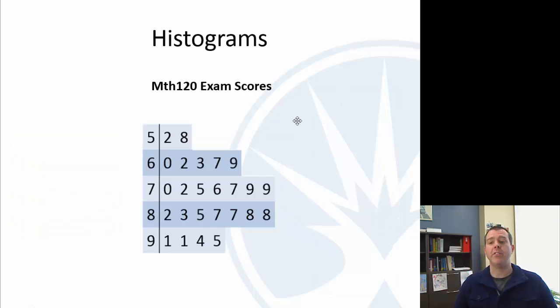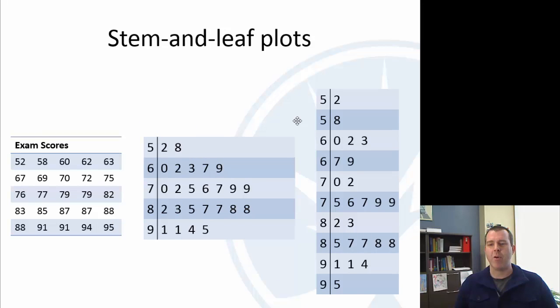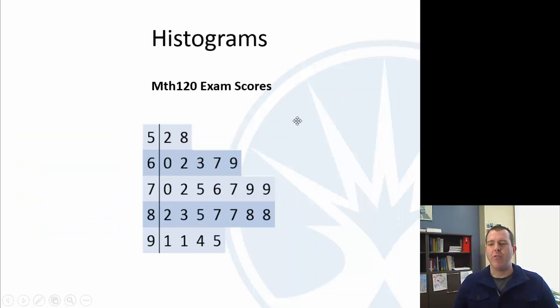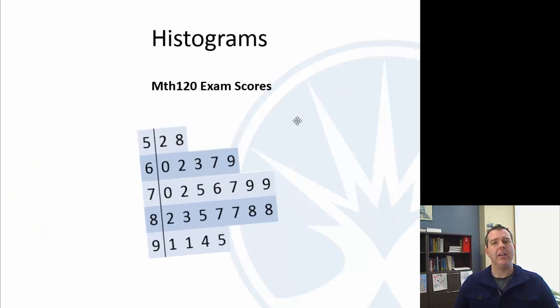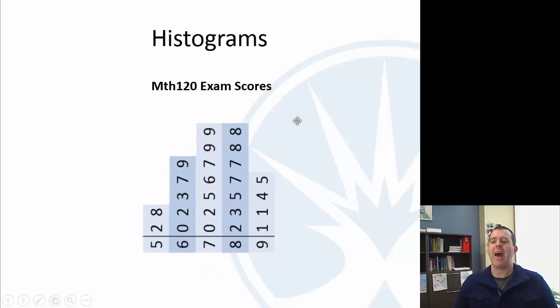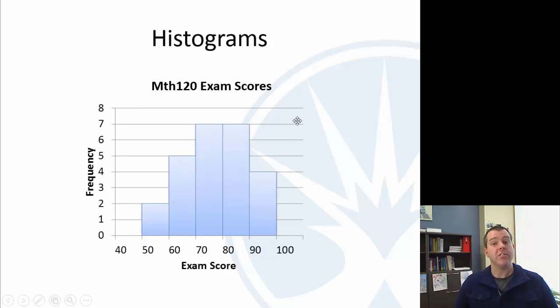Related to this is something called a histogram. So say we have our stem-and-leaf plot here, just kind of reformatted a little bit. But if we turn it on its side and just kind of take out the numerical values and think of this is 50 to 59, this is 60 to 69, and make a graph out of that, this is a histogram.